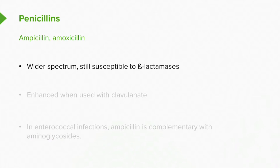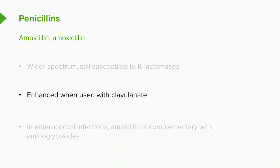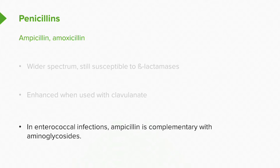Ampicillin and amoxicillin are wide-spectrum agents, but they are still susceptible to beta-lactamases. They are enhanced when combined with clavulanate. In enterococcal infections, ampicillin is complementary with aminoglycosides — we'll often use combinations like ampicillin and gentamicin because they work very well together. That's called bacterial synergy.